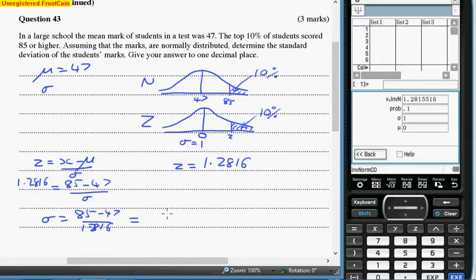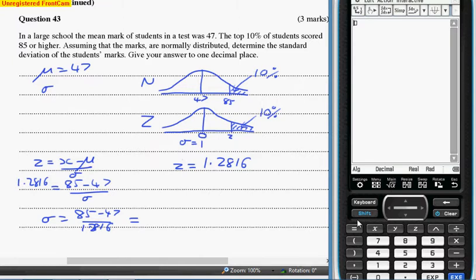And that comes to... I'd better do that on the calculator. 85 minus 47. We should be able to do that in our head, shouldn't we? 85 minus 47, that would be 38.